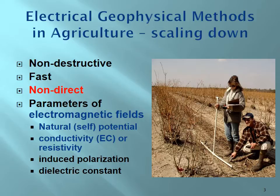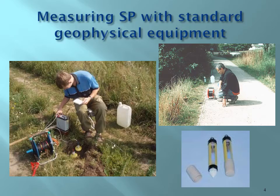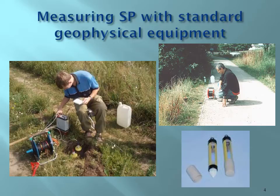Those methods can also measure induced polarization and the dielectric constant, but those properties have not been very popular in agricultural applications. As for measuring self-potential, the standard geophysical equipment is very difficult to use in agriculture — you can see very large electrodes which require grounding and pouring conductive solution around them. The equipment is very big and difficult to apply to soil samples or plants.